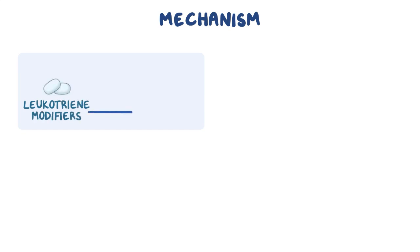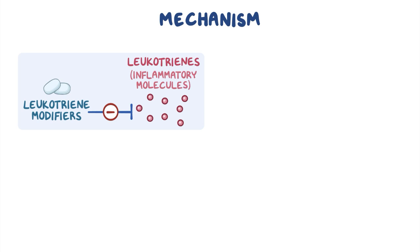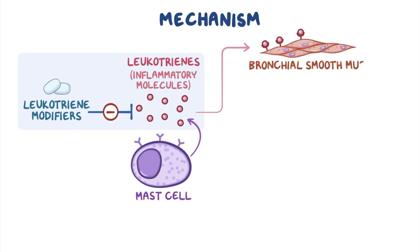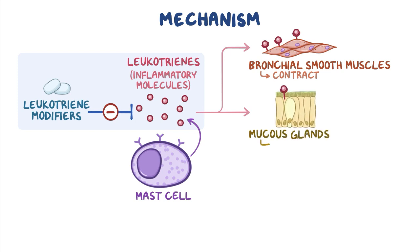Leukotriene modifiers act by decreasing the action of leukotrienes, which are inflammatory molecules produced and released by certain immune cells, such as mast cells, to trigger an inflammatory response. Once released, leukotrienes bind to leukotriene receptors located on the bronchial smooth muscles, causing them to contract, as well as on the mucus glands to increase mucus secretion.